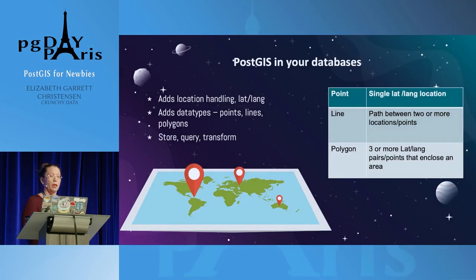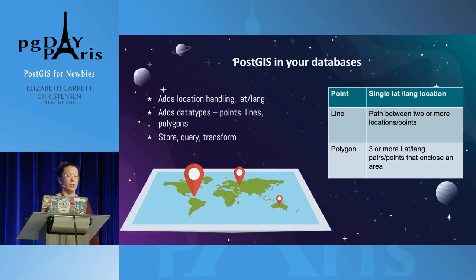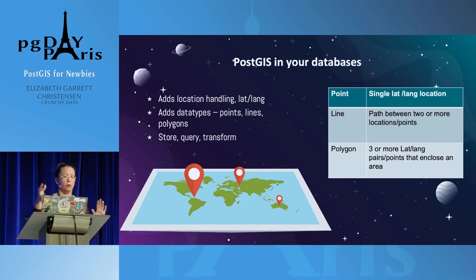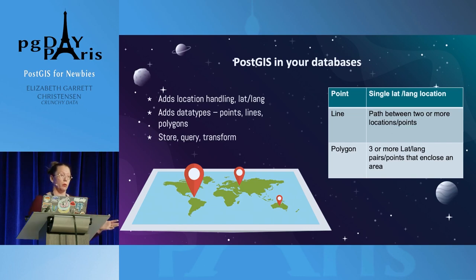At a super high level, PostGIS in your database is going to add three new data types for handling spatial data. The foundational data type is the point, which is just a single latitude and longitude location. Then there's lines, which are a path between two or more points, and then a polygon, which would be three or more latitude and longitude pairs and points to enclose an area. With those new data types, you can store, query, transform, and do all kinds of fancy mapping stuff.